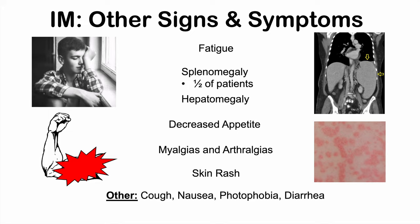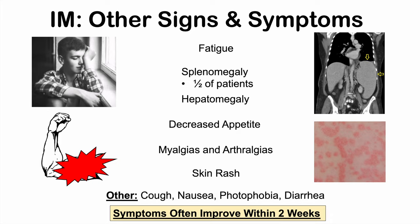Diarrhea can also occur, particularly in children infected with Epstein-Barr virus, along with cough, nausea, and photophobia (sensitivity to light). When an individual becomes ill with infectious mononucleosis, symptoms often improve within two weeks. The classic presentation includes fever, sore throat, lymphadenopathy of the posterior cervical chain, fatigue, and splenomegaly with secondary decreased appetite.